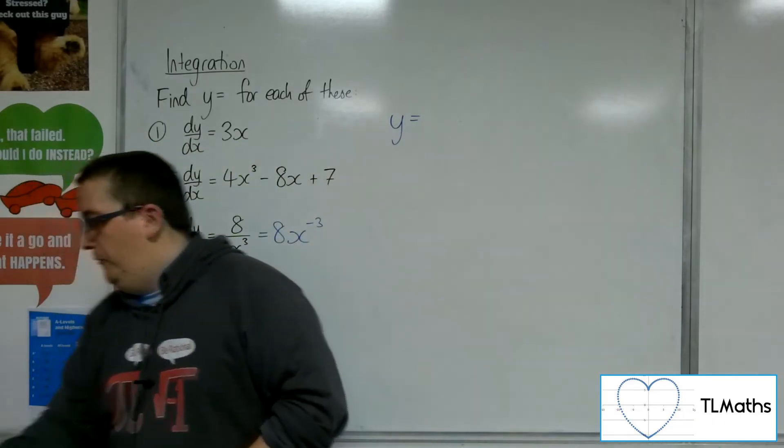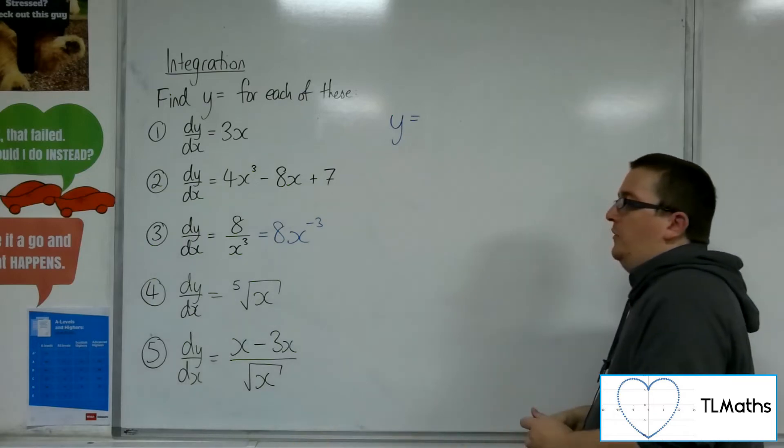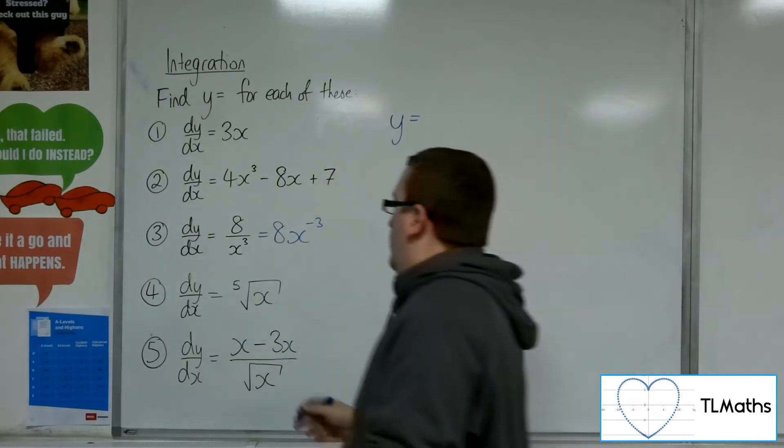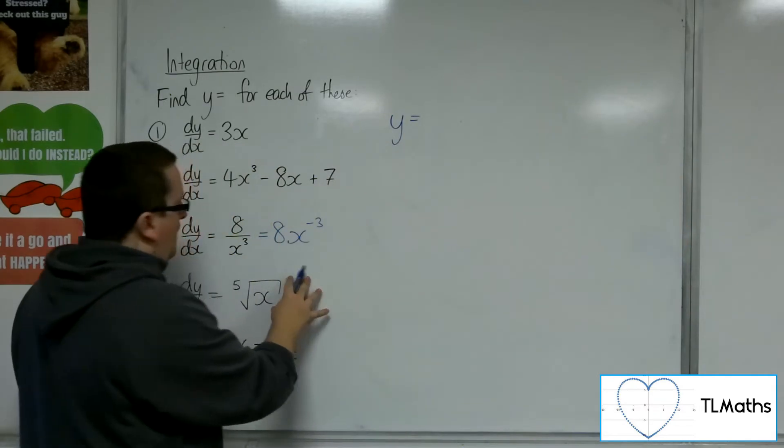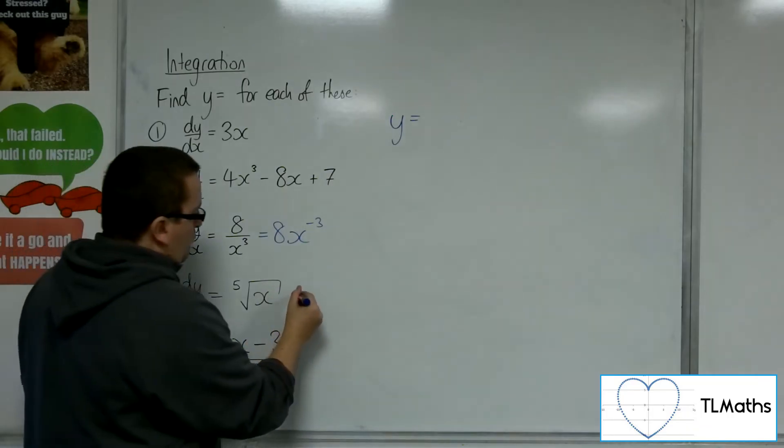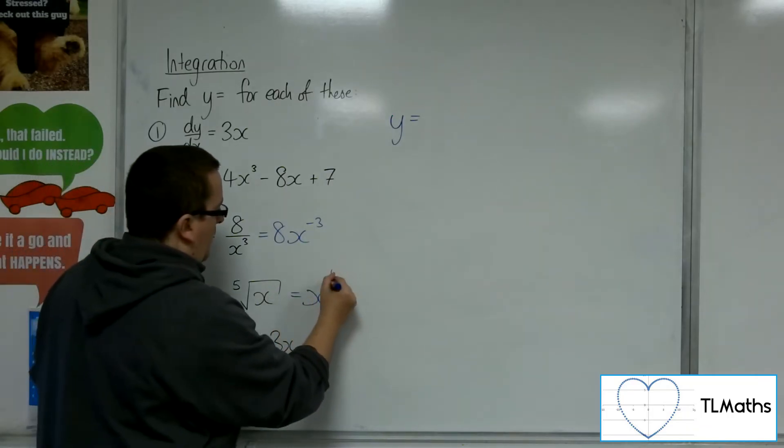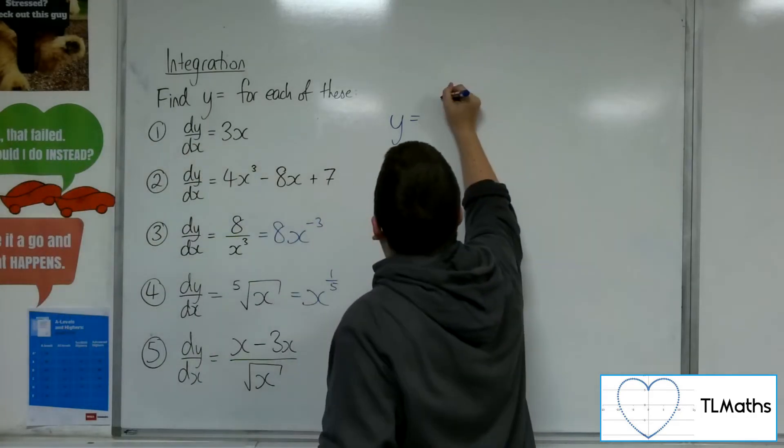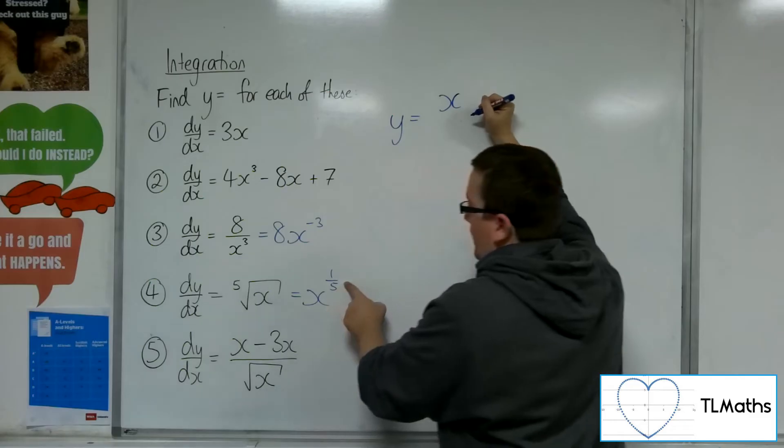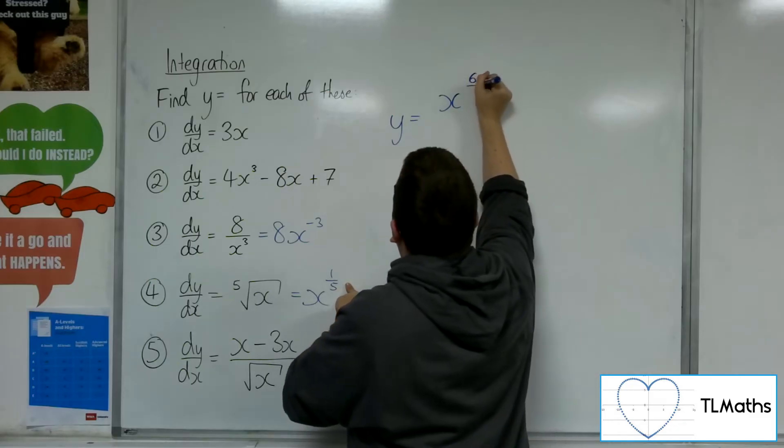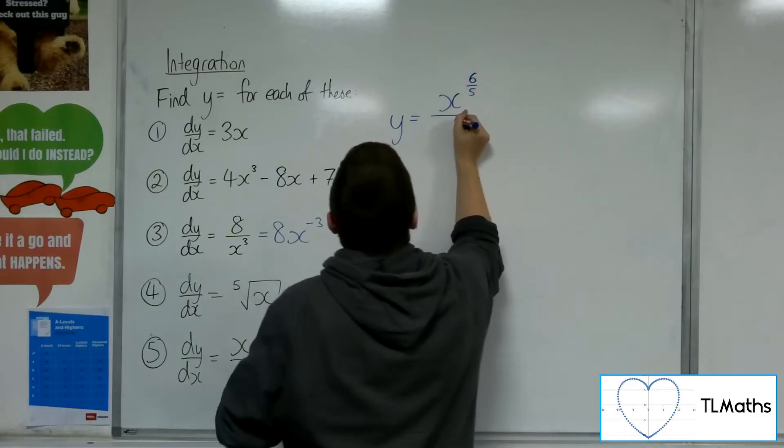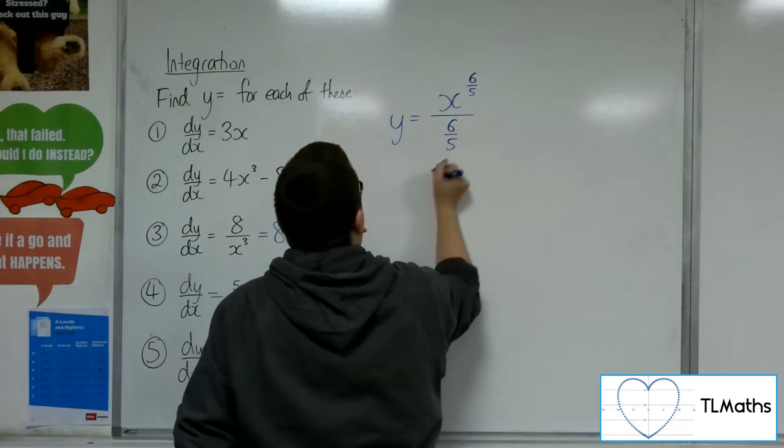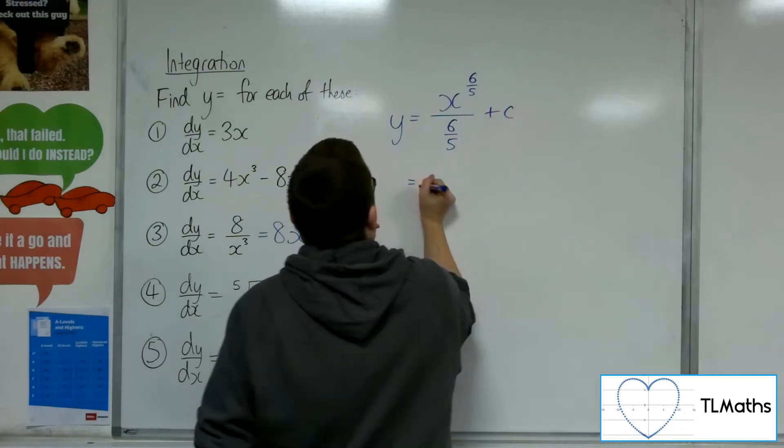Let's have a look at number 4. dy by dx is equal to the 5th root of x, so it's not currently in a format that I can integrate, so I want to rewrite that as x to the 1 over 5. Using my indices, so I'm going to add 1 to the power, so 1 fifth plus 1 is 6 fifths, and I'm going to divide by that new power, plus that constant of integration c.